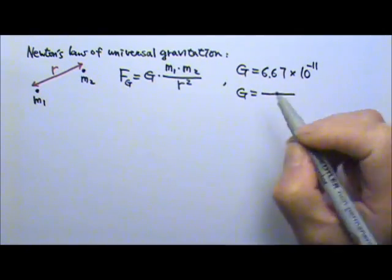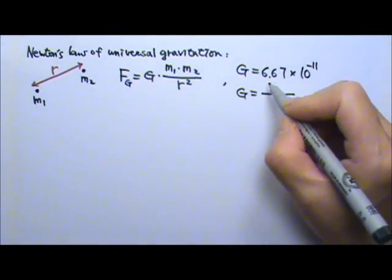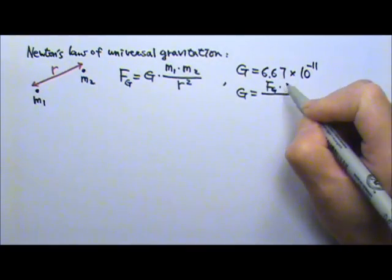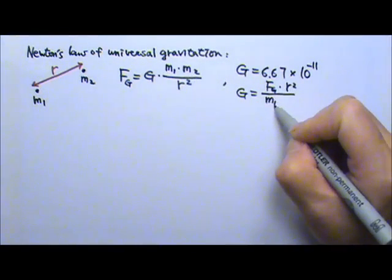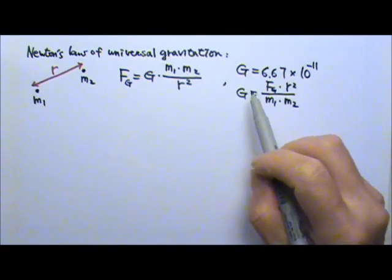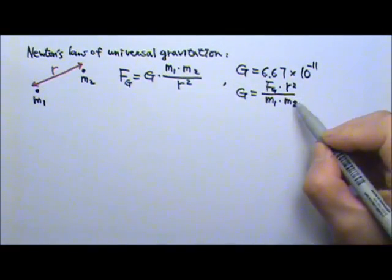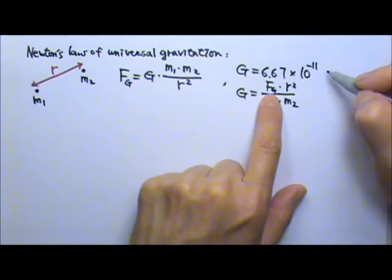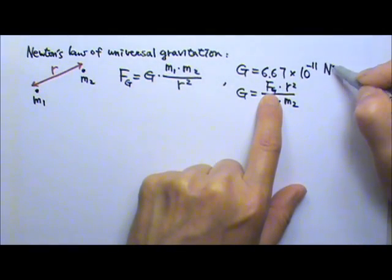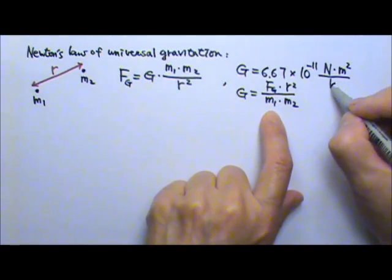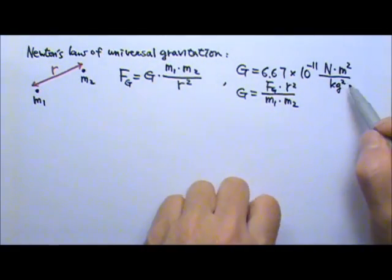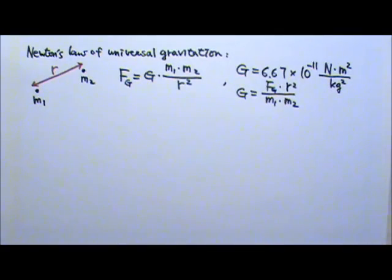That means G would be, if you multiply by r squared on both sides, the force times the r squared and then divide by the m1 times m2, you will get the G. That means the unit must be the force, newtons times the distance squared, m squared divided by the mass squared, kg squared. So that's the big G in standard unit.